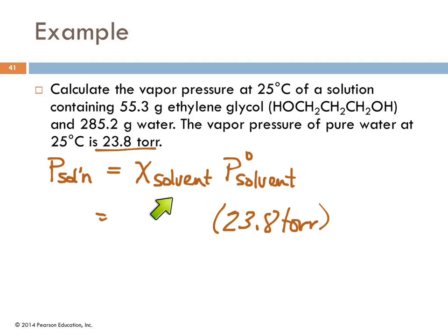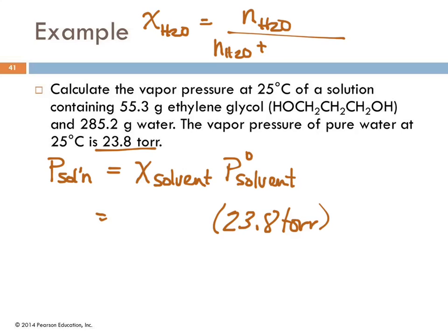We need the mole fraction of solvent—H₂O. That equals moles of H₂O divided by moles of H₂O plus moles of ethylene glycol. First, let's find the moles of ethylene glycol from 55.3 grams. Ethylene glycol has 8 hydrogens, 3 carbons... we need its molar mass.